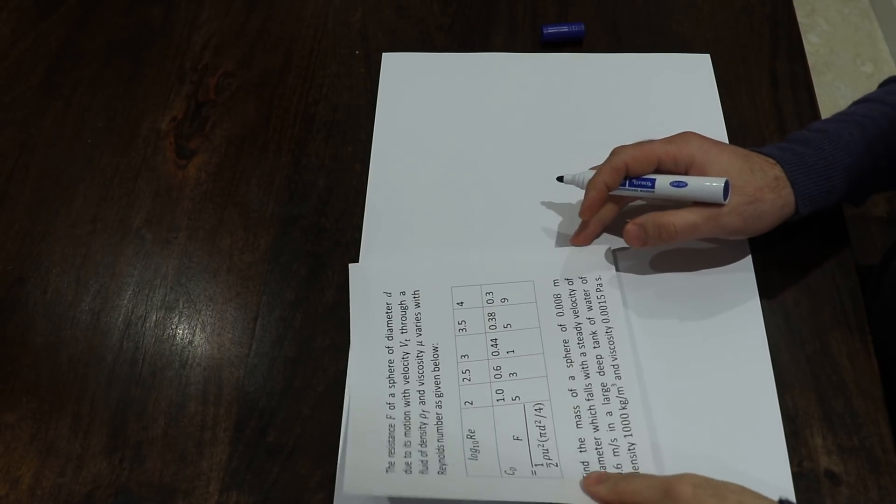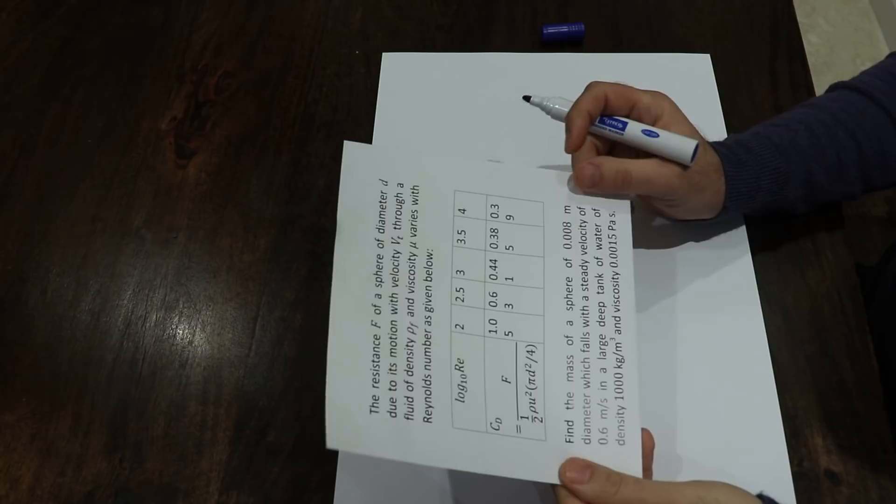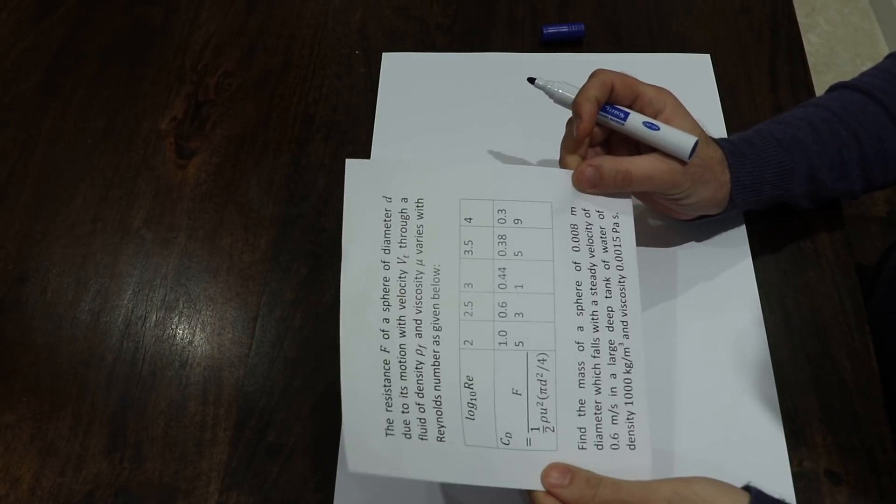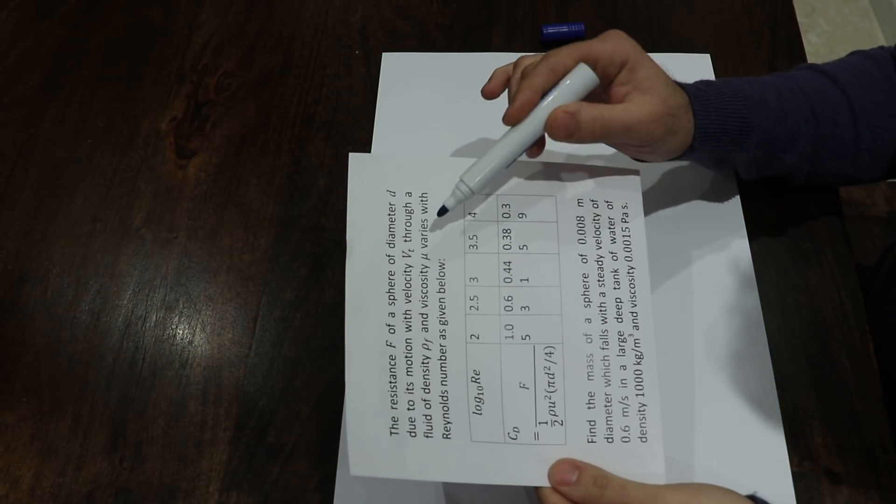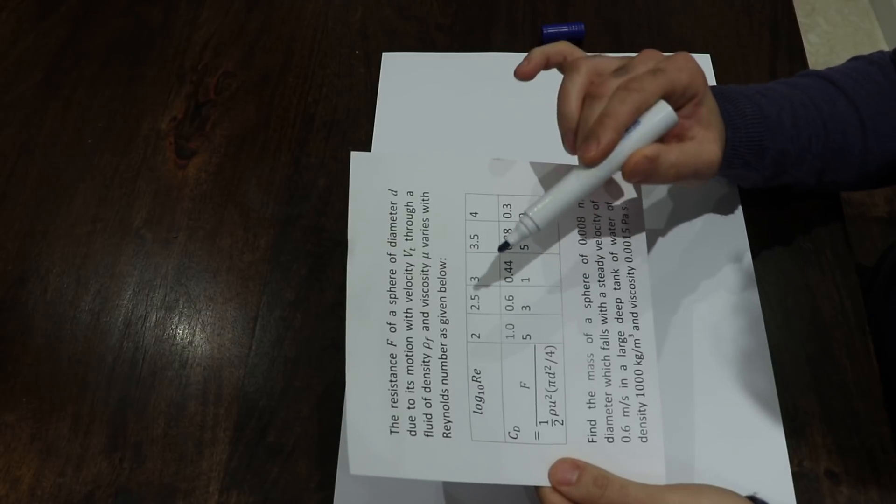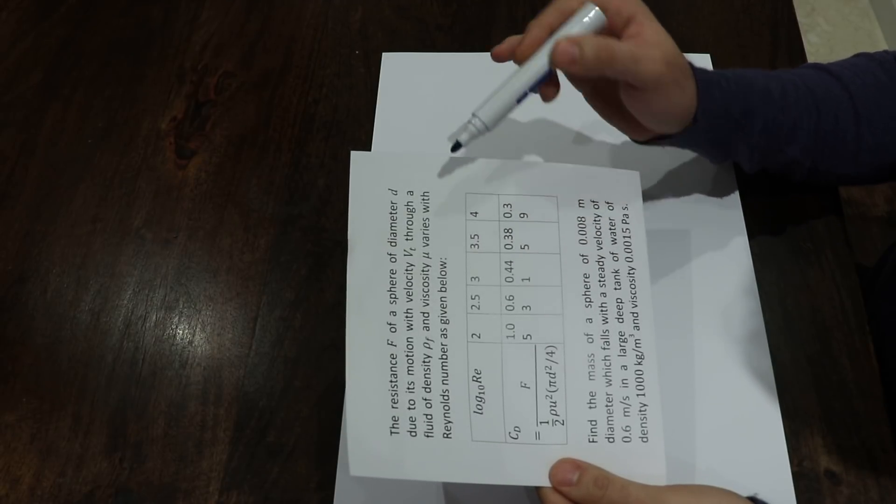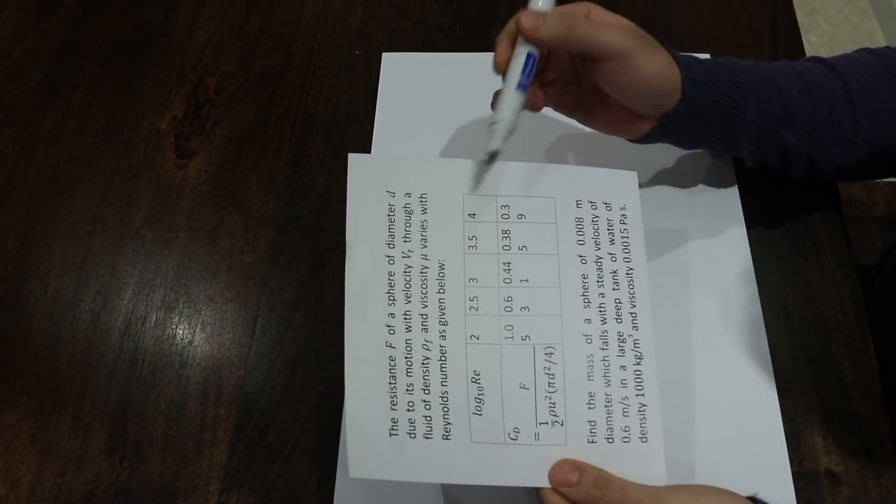Hello, this question is about particle motion in fluid. The resistance F of a sphere of diameter d, moving with velocity vt through a fluid of density ρf and viscosity μ, varies with Reynolds number as given below.